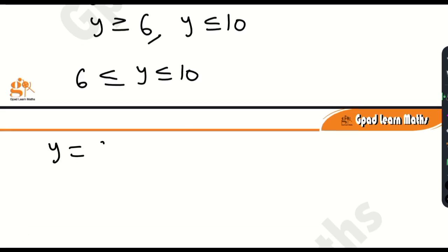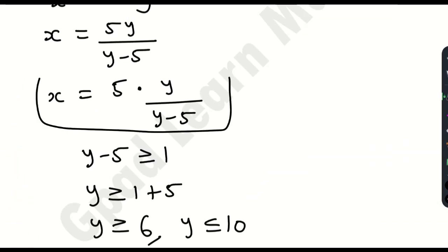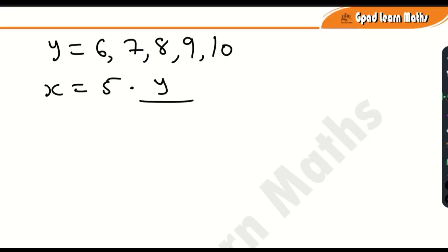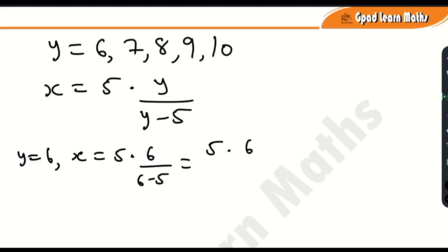So y can equal 6, 7, 8, 9, or 10. We already have x = 5y / (y − 5). When y = 6: x = 5 × 6 / (6 − 5) = 30 / 1 = 30. So when y is 6, x is 30.